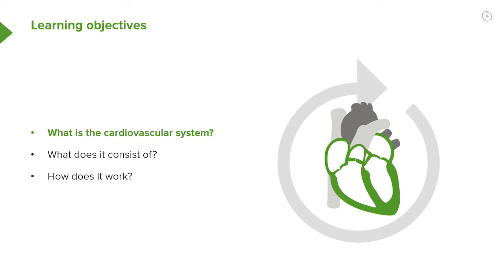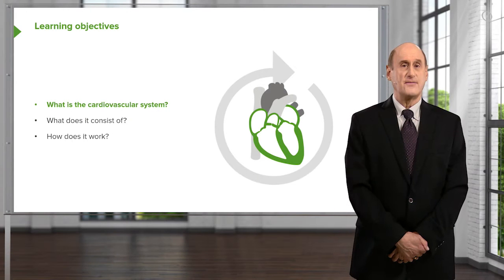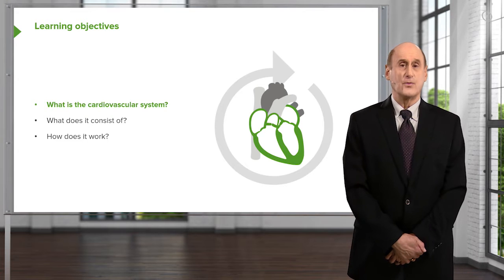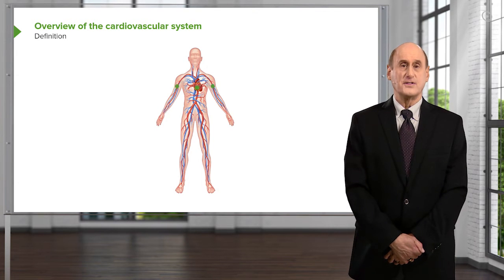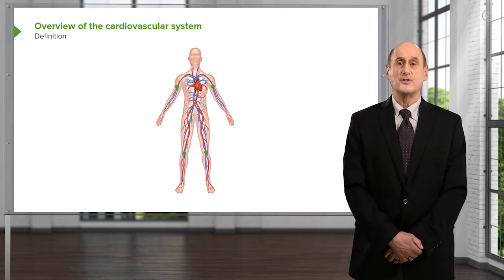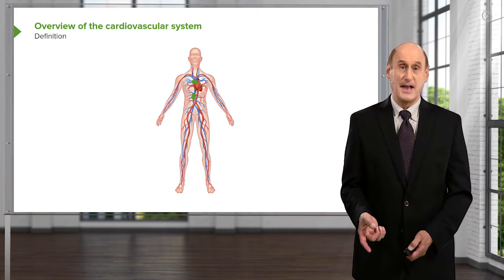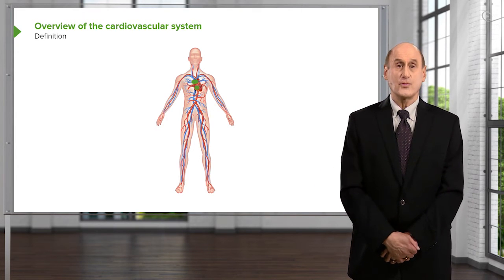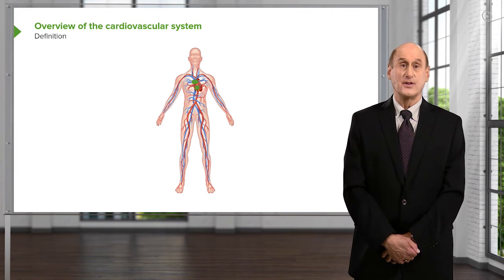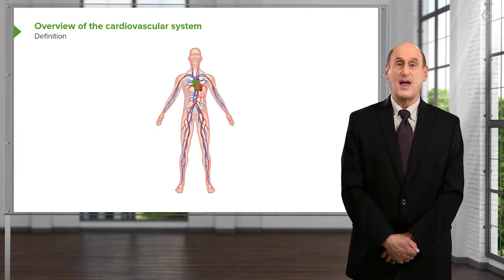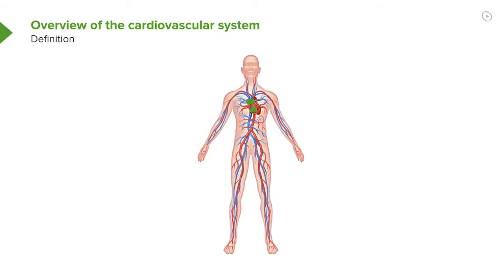Let's start with an overview of the cardiovascular system with some definition and also some functions. What is the cardiovascular system? It's the organ system that permits blood to circulate throughout the body, and it transports nutrients, gases, hormones, and blood cells to and from every cell in the body. In other words, it's essential for the well-being of the cells in our body.